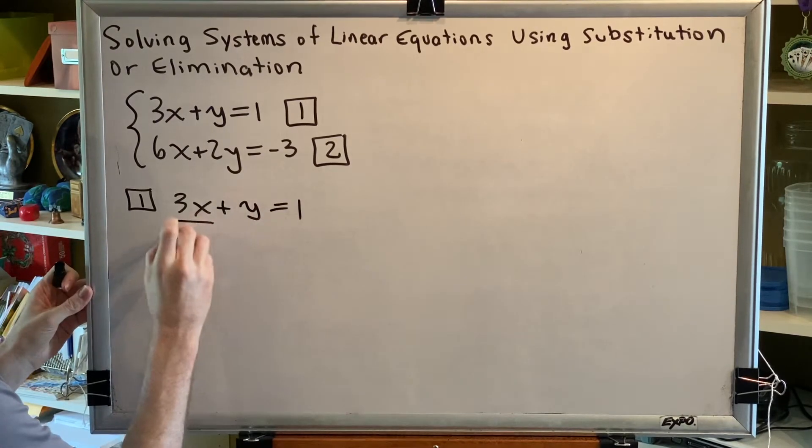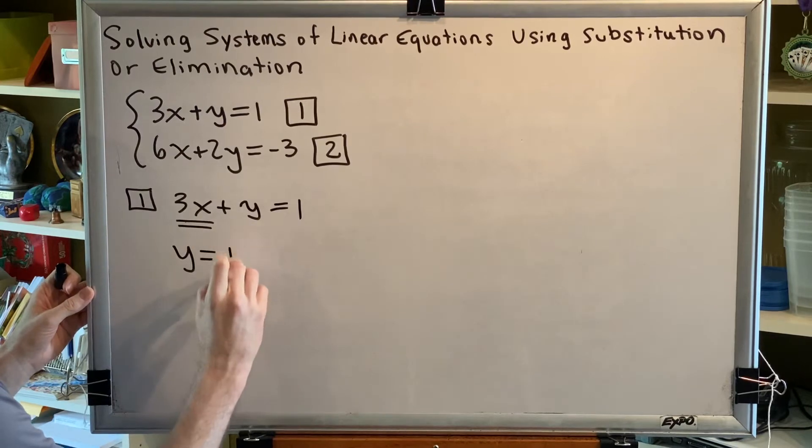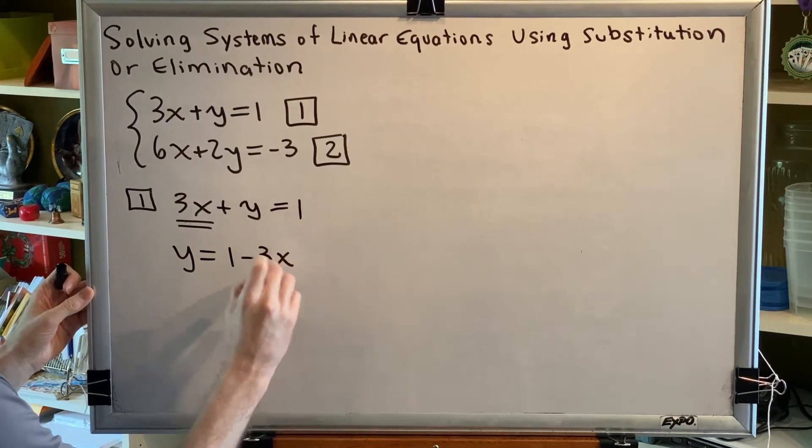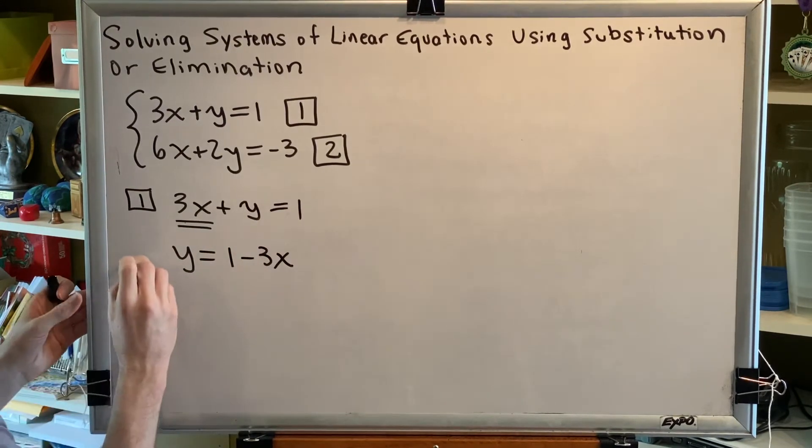To do that we're going to move this term to the other side. And remember that when a term changes sides it changes signs. So we get y is equal to 1 subtract 3x.